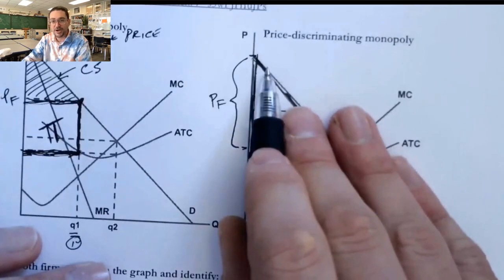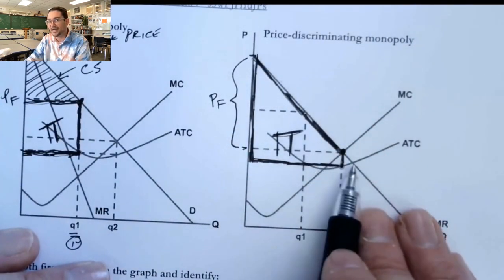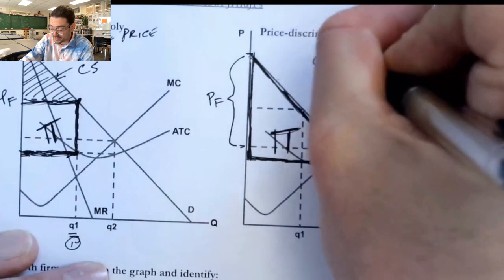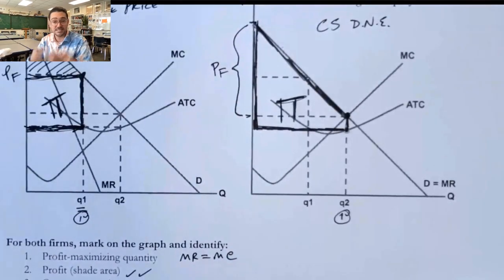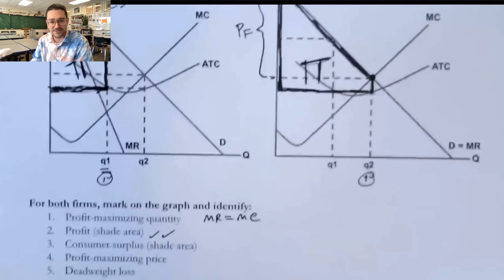Now, in this market, they are paying exactly what they're willing to pay. So consumer surplus does not exist. It doesn't exist. There is none. That's why the consumers feel like they're getting screwed.